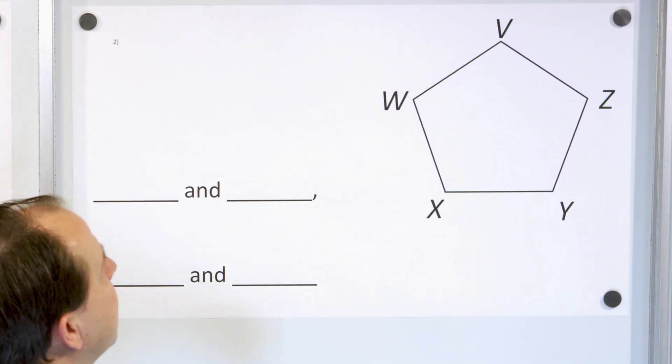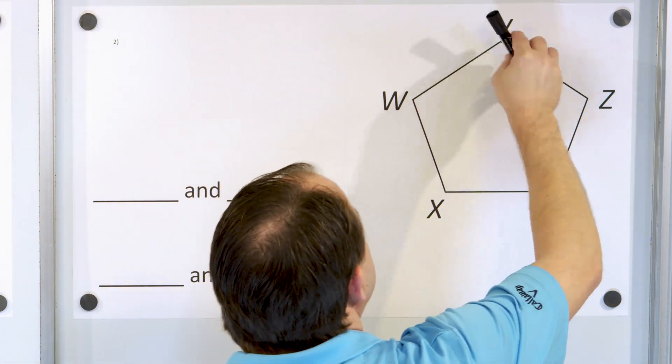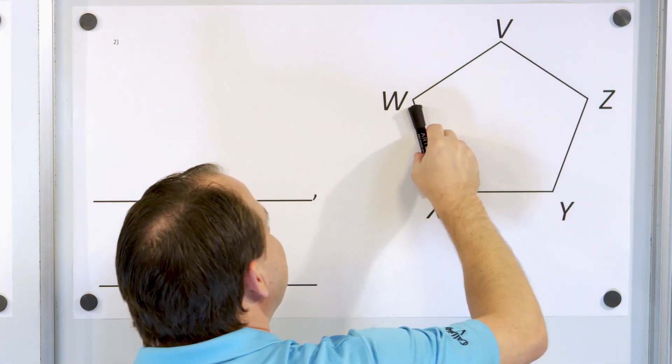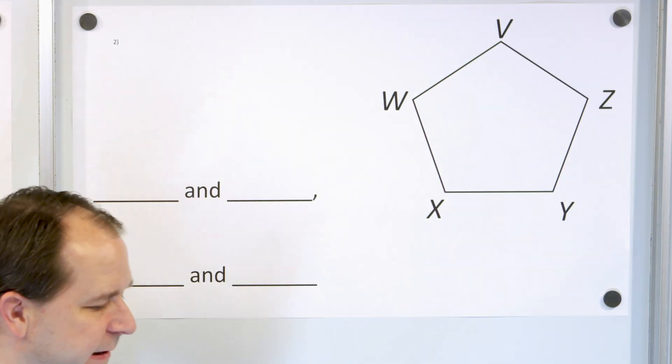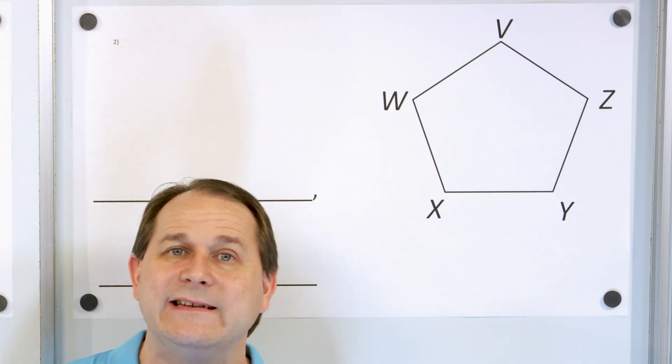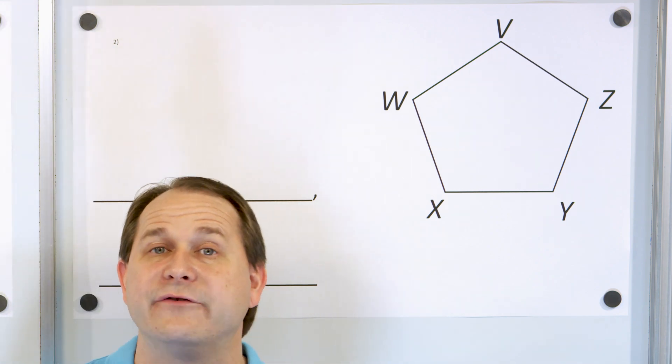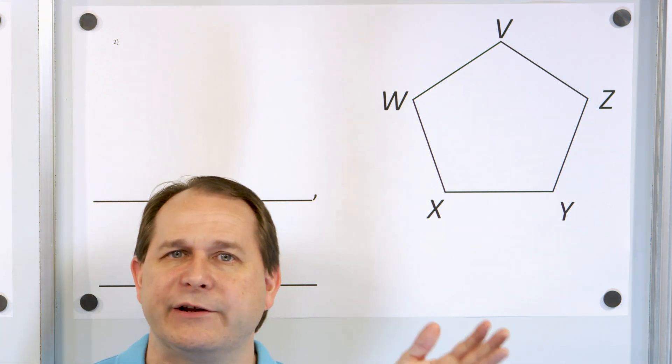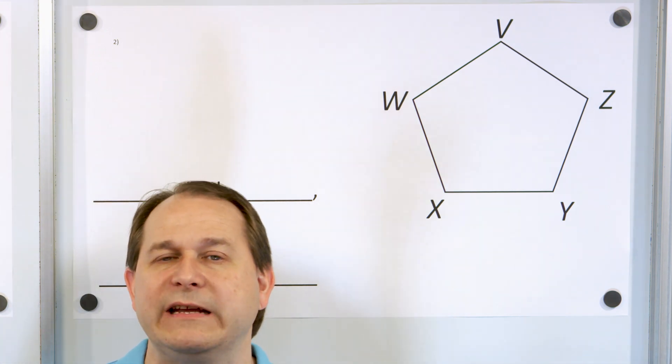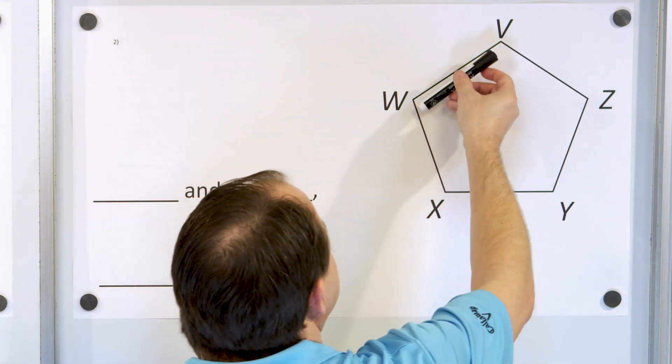We have a five-sided figure, one, two, three, four, five. So this is a pentagon, and the question is, I want us to name and write down two pairs of intersecting lines. So intersecting lines, they don't have to intersect at 90 degrees, they're not perpendicular, they just need to cross somewhere.